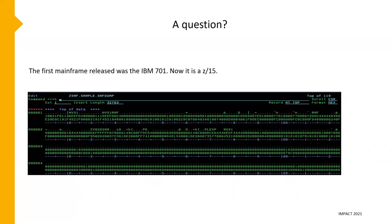Let's start off with a question. We're all mainframers — when was the first IBM mainframe released? It was an IBM 701, and the latest one is a Z15. Please don't Google it; I'll give you 10 or 15 seconds to think about it, and if you could just answer in the chat window. When was the IBM 701 released?